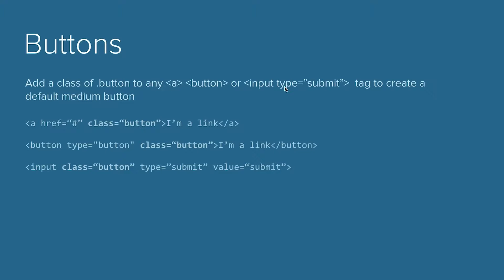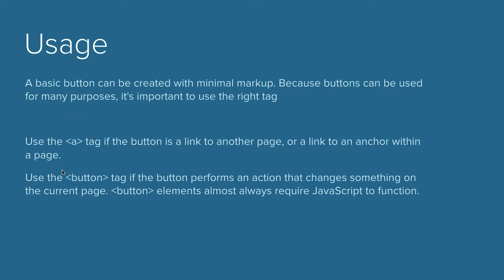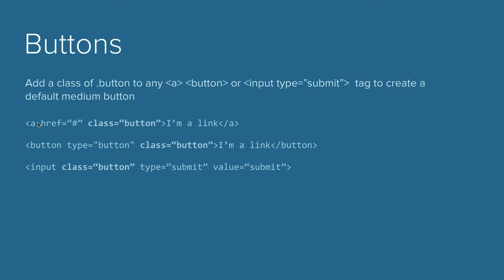You just add that one class and it defaults to our medium button. There are a ton of different variations within buttons. With the advent of Foundation 6, we really focused on semantic markup. We took extra care to understand what the difference is between an anchor tag, a button, and an input. There are different times when you use each one, and for screen readers, they read these things much differently — the page is interpreted differently between anchor tags, button tags, and inputs.